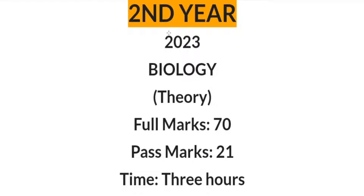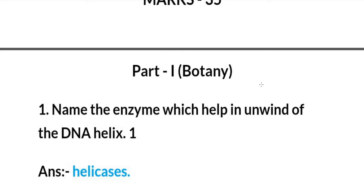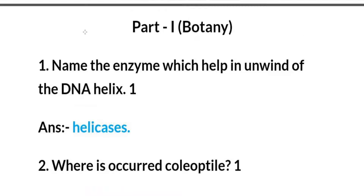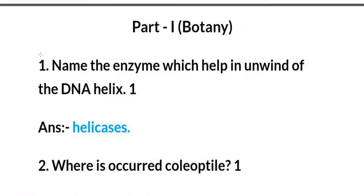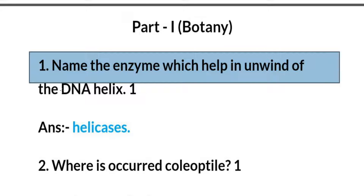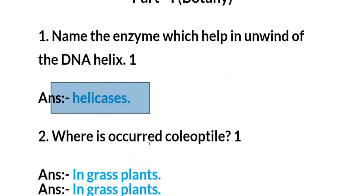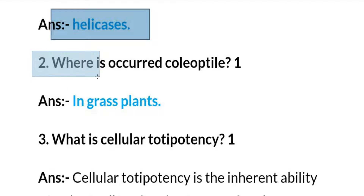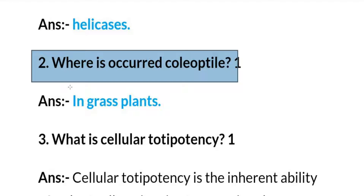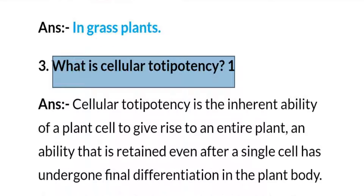Now this paper is biology. Here we will discuss the botany part first. Question number one: Name the enzyme which helps in the unwinding of the DNA helix. One mark. Next question: Where does the coleoptile occur in a grass plant?